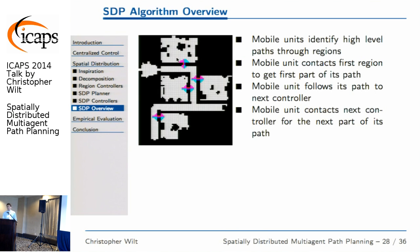The entire algorithm works as follows: mobile units identify a high-level path through the different regions of the graph. For example, a mobile unit going from one room to another figures out it needs to start in one room, go through a doorway controlled by its own controller, move through a long room, through another doorway, and into the destination room. It contacts the first controller on its path, requests a path from its current location to the next controller or final destination, executes that path until it reaches the next controller, then asks for the next segment. It repeats this until it reaches its goal.